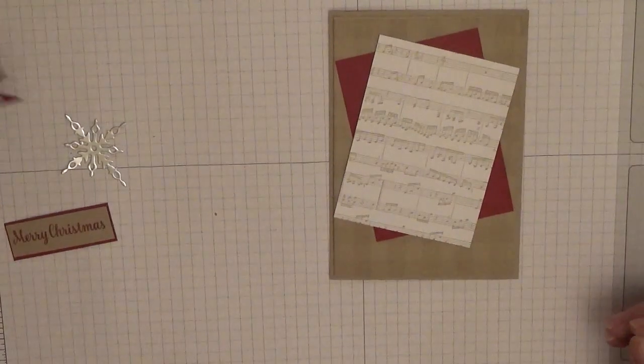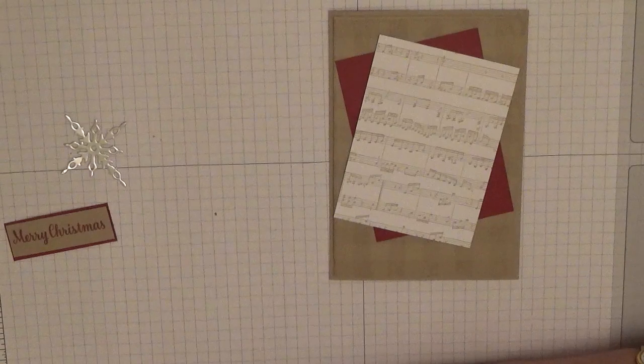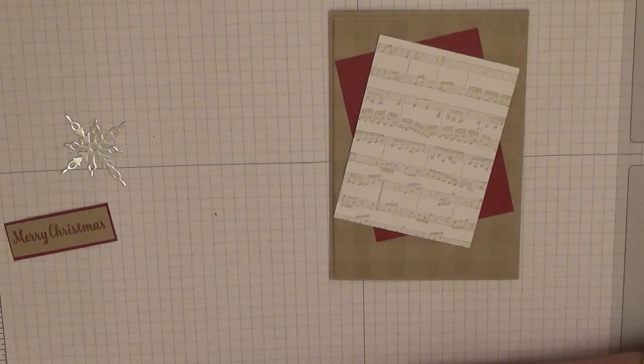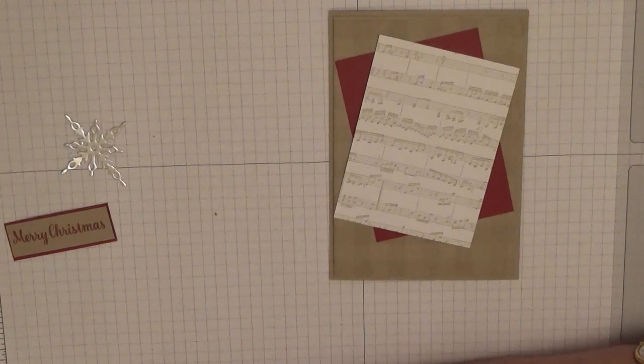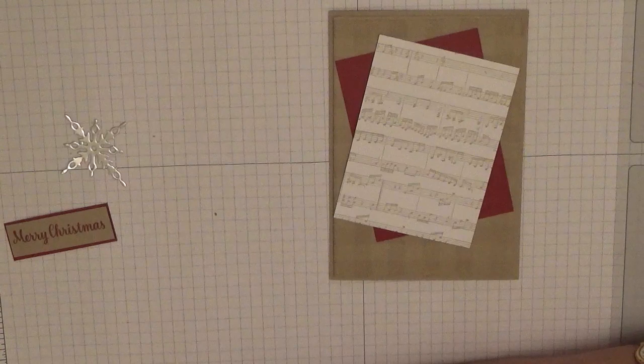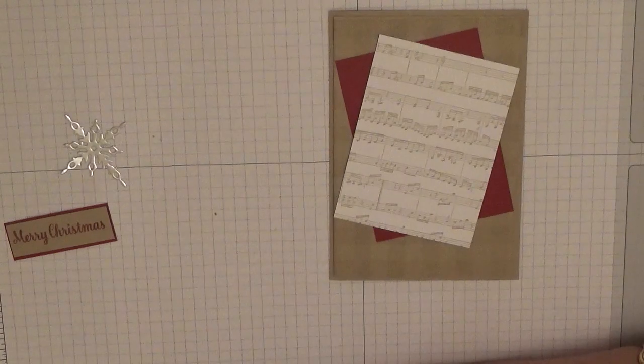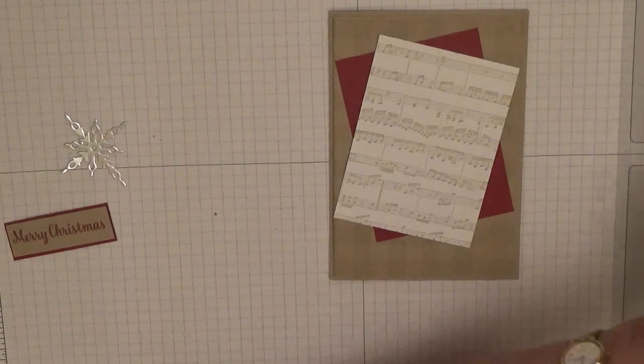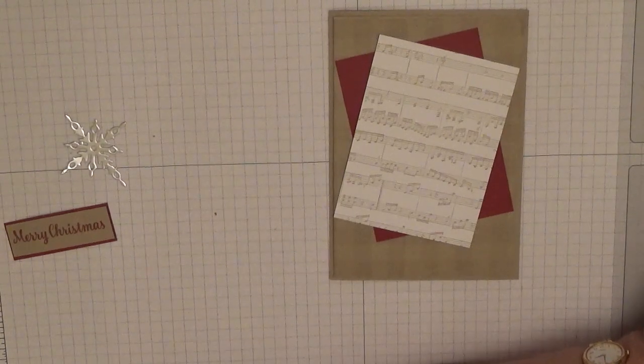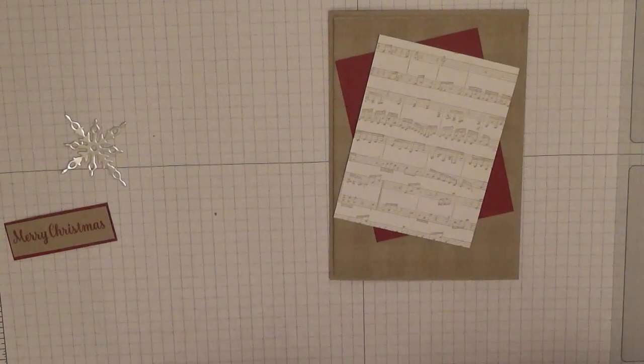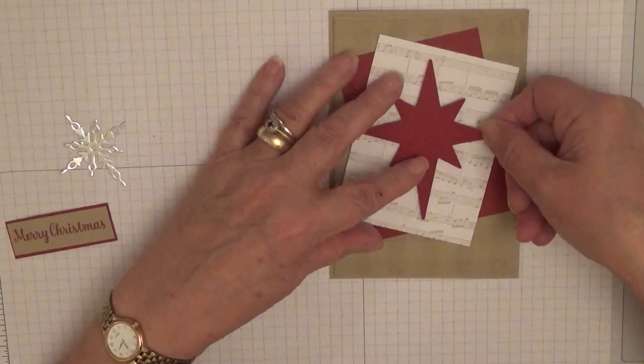And then with the star, which I've already dimensionals on, I'm going to take all the backings off. I've put loads on. No wonder I keep running out of them. I use too many. And with this we're going to stick it straight.